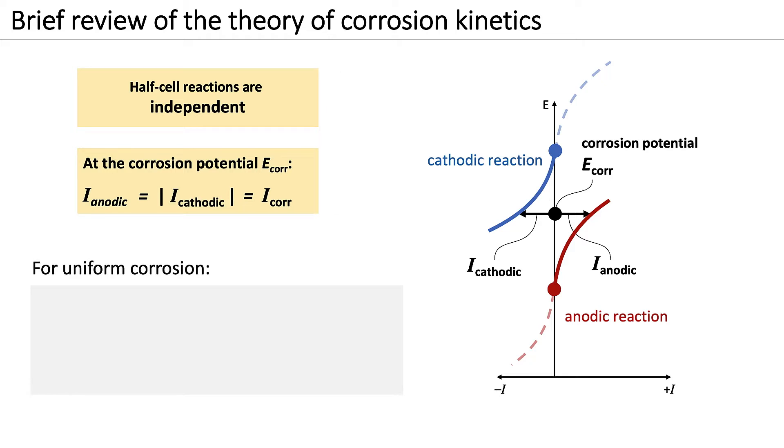Here we are considering uniform corrosion. In this case, if the exposed metal surface area is known, we can obtain the corrosion current density by dividing the corrosion current I-corr by this surface area. This corrosion current density is also termed the corrosion rate.